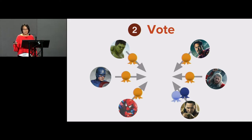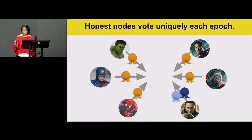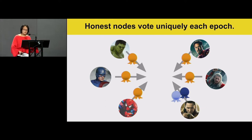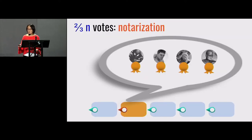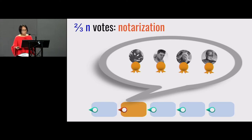Unfortunately, in this case Loki is corrupt and instead of voting for the orange block, he votes for two blue blocks. An important rule is that honest nodes will vote uniquely in every epoch — in every epoch, I vote on the first proposal I hear from the proposer and only that block. We then wait until we collect enough votes. Whenever a block gets votes from two-thirds of the people, we say it has a notarization. When a block gets notarized, it means many people have voted on it, so there is high enough confidence that many want this block confirmed.